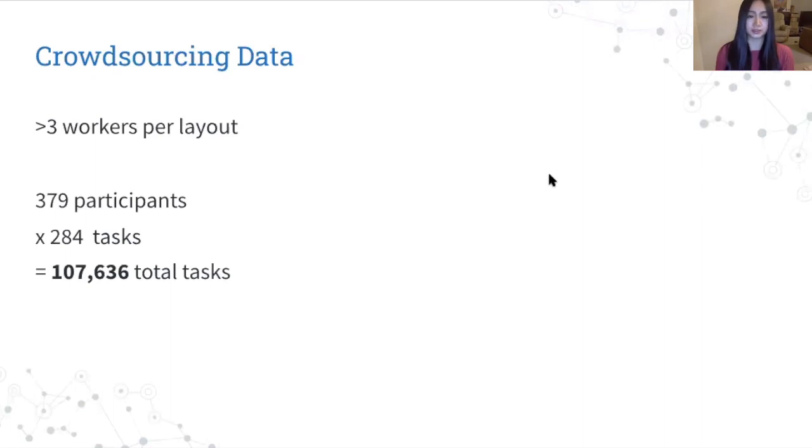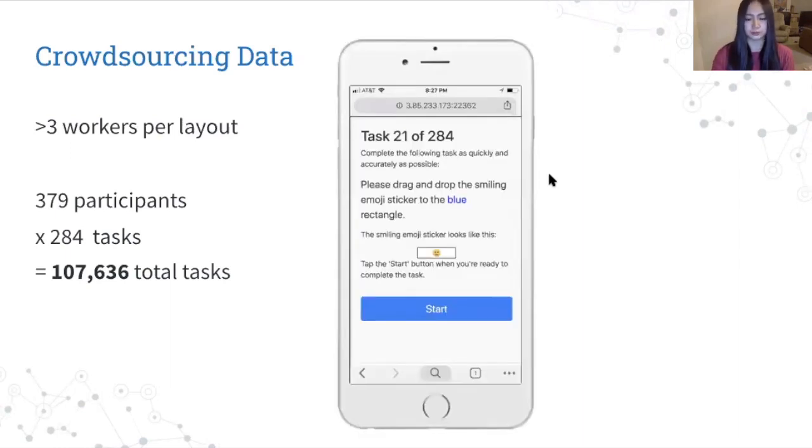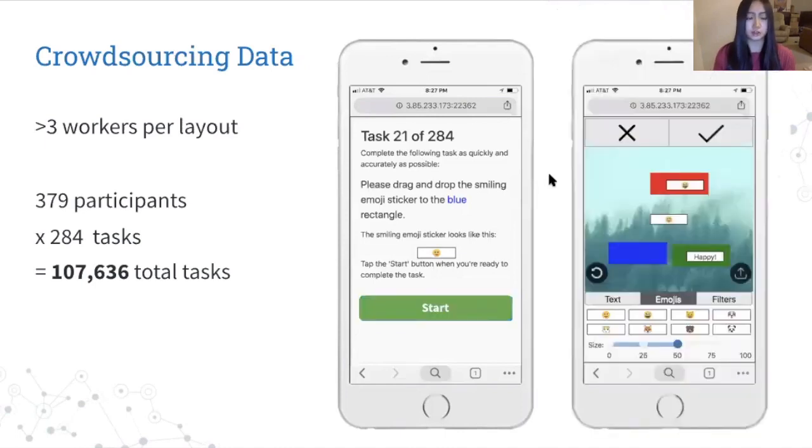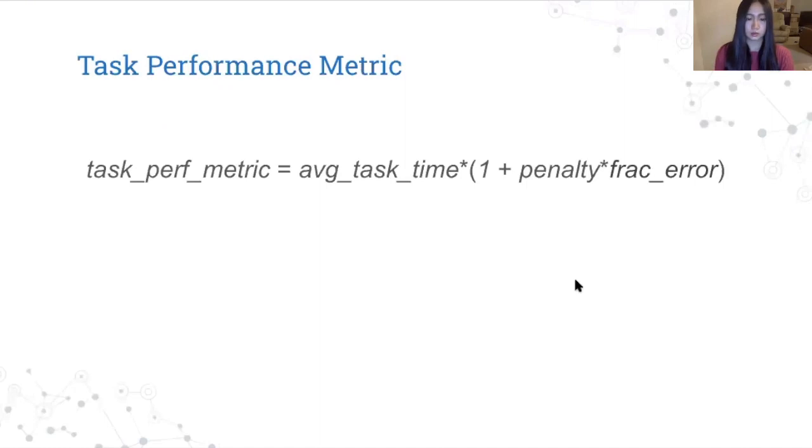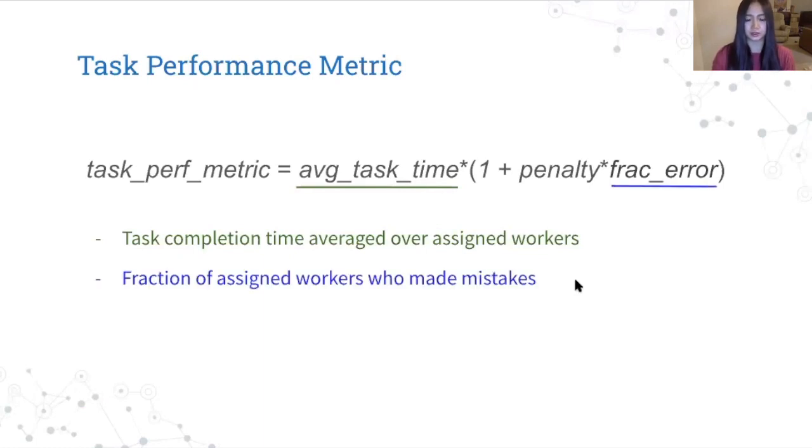So for each task, we collected the completion time, and also whether or not the worker made an error on the task. The workers first shown instructions for the task. And when they're ready to complete the task, they tap the start button and are taken to the UI to then complete the task. We aim for the task performance metric to capture how quickly and accurately people can complete tasks. So we have the completion time for the task average across all workers assigned to the layout, and we threw out outliers. And this is increased by the fraction of workers who made a mistake on the task, and that's multiplied by a penalty value, which is 0.8 for major errors, like accidentally canceling all your changes, and 0.5 for minor errors, like accidentally adding the wrong filter.